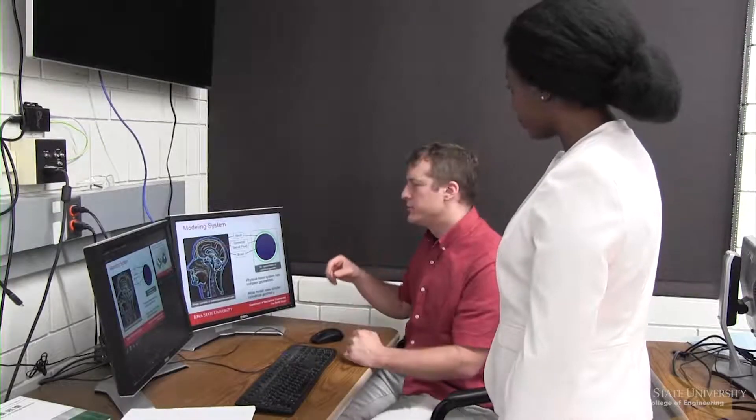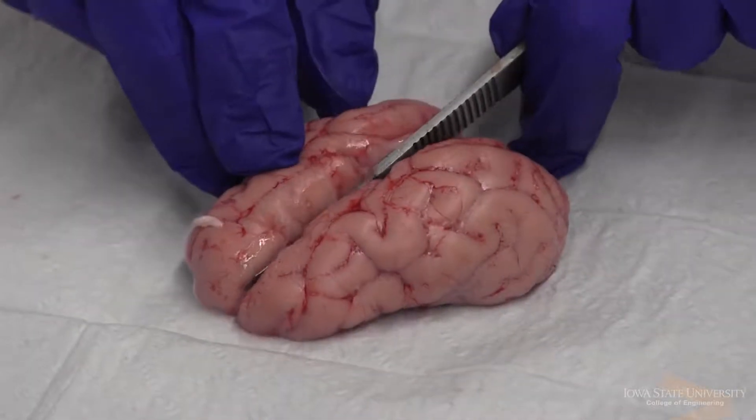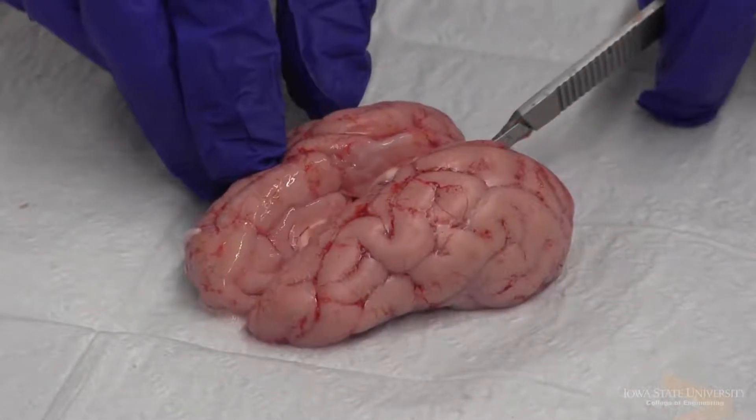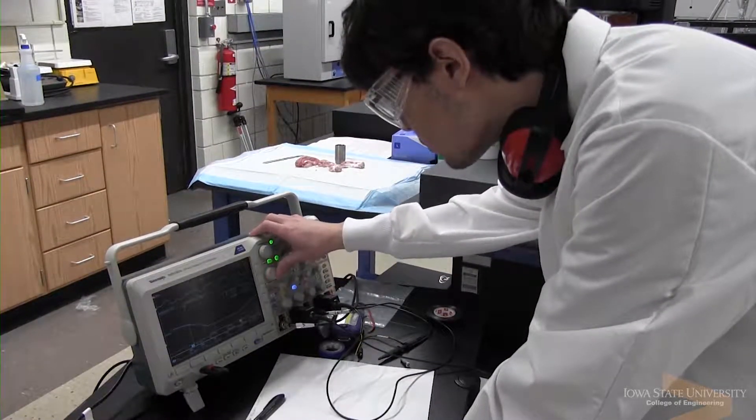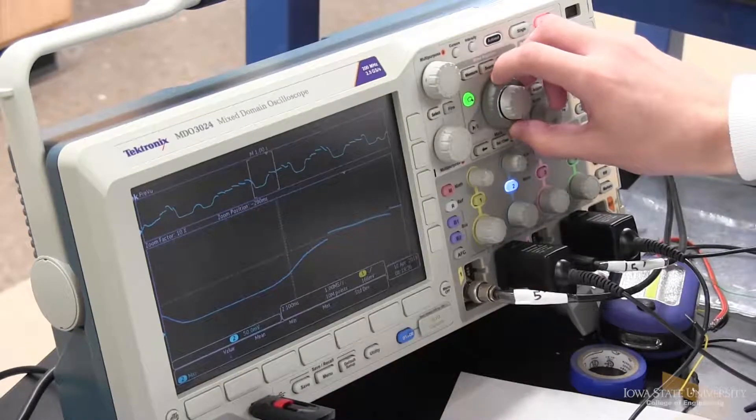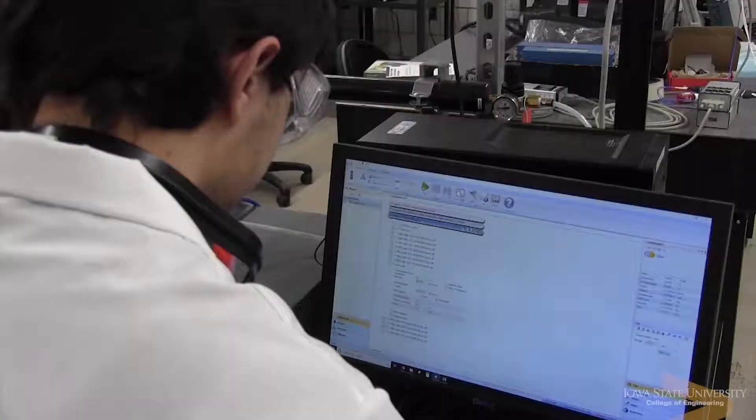Understanding how soft materials respond to external loads is invaluable in many biomedical applications. One such application is trying to understand how to design biocompatible neural electrodes. These neural electrodes are implanted into the brain of an individual with a neuromuscular disorder, such as Parkinson's.